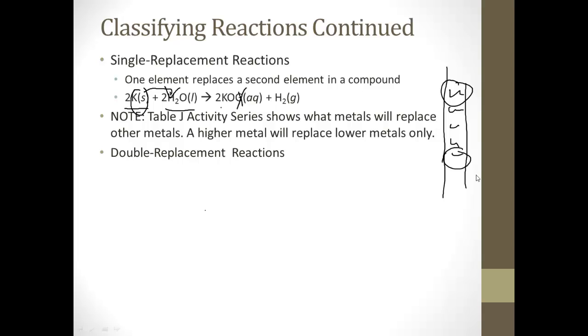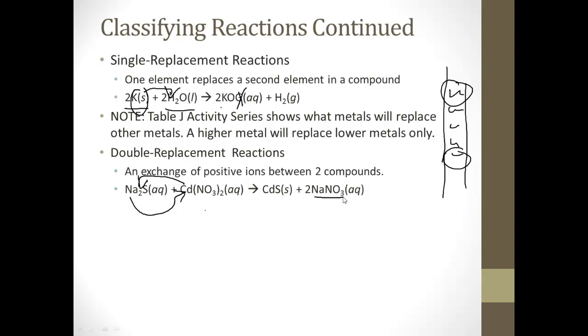Next kind is a double replacement reaction, an exchange of positive ions between two compounds. It's just two things switching. Here, double replacement would be the sodium taking the place of the cadmium and the cadmium taking the place of the sodium. We end up with sodium nitrate and cadmium sulfide. It's just a swap.